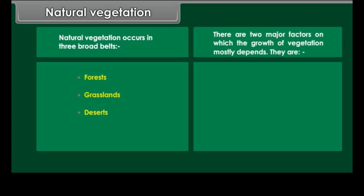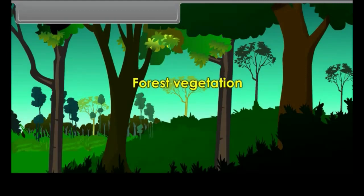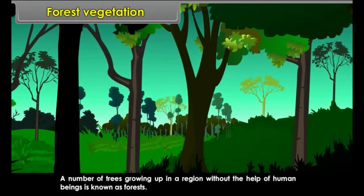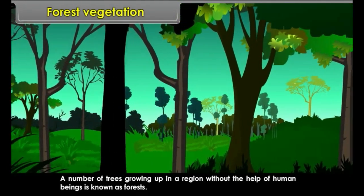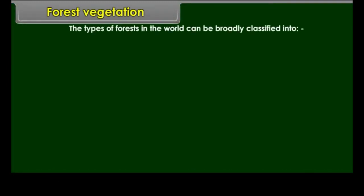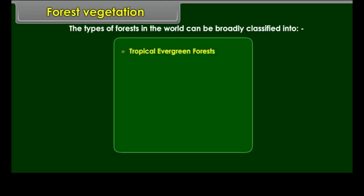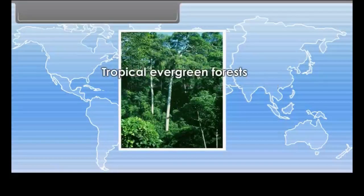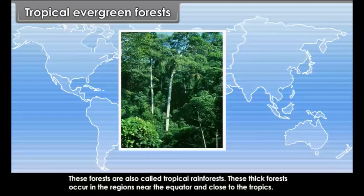There are two major factors on which the growth of vegetation mostly depends: temperature and moisture. A number of trees growing up in a region without the help of human beings is known as forest. The types of forests in the world can be broadly classified into Tropical evergreen forests, Tropical monsoon forests, Temperate evergreen forests, Mediterranean type forests, Temperate deciduous forests, and Coniferous forests.